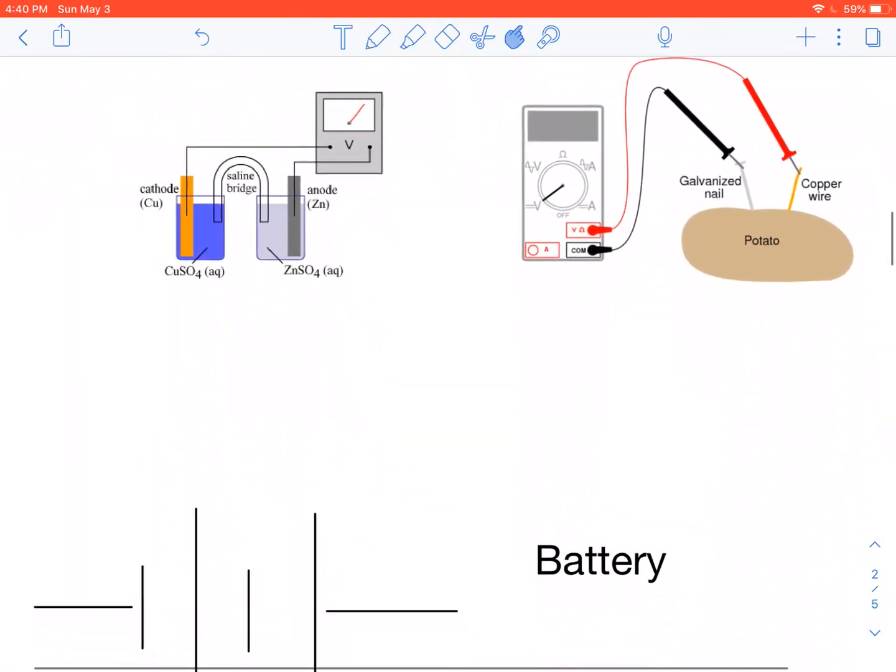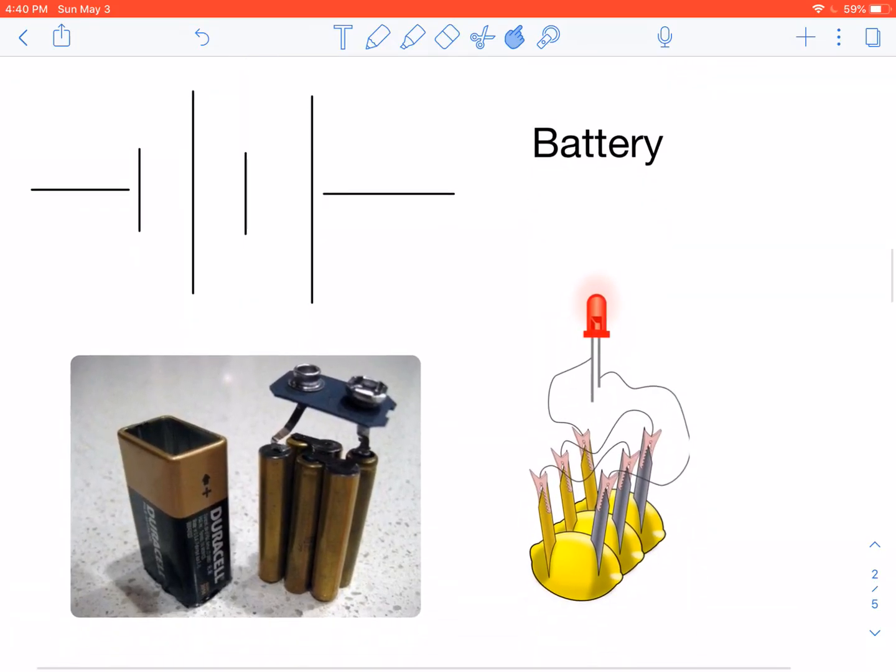A more complicated version of this is what we call a battery. A battery is basically a collection of cells, and we've got two pictures of this down here. One is a collection of three different little lemon batteries, lemon cells, that are connected together. They've again got the copper and the zinc, and they're all connected together, and between them they power this little LED.